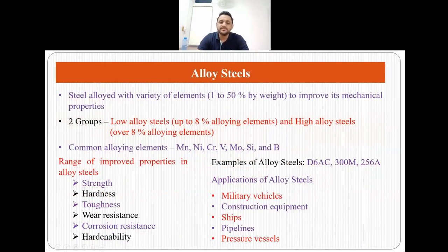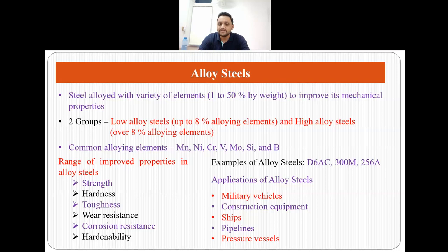The second category of steels is alloy steels. Here the steel is alloyed with a variety of elements, and this percentage of alloying can vary from 1 to 50 percent by weight. This alloying improves the mechanical properties of the steels. Alloy steels can be subdivided into two major categories: low alloy steels where alloying elements are less than 8 percent, and high alloy steels where the concentration of alloying elements is over 8 percent. Common alloying elements are manganese, nickel, chromium, vanadium, molybdenum, silicon and boron.